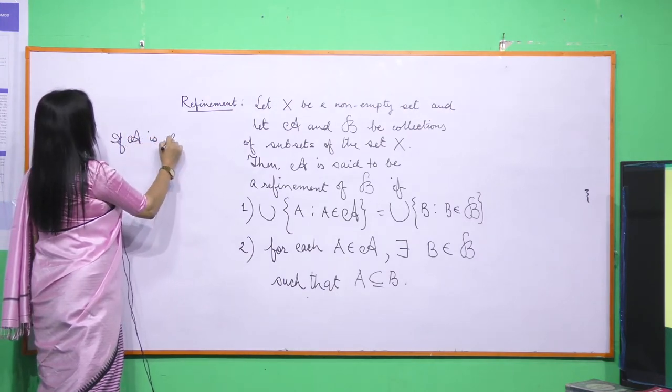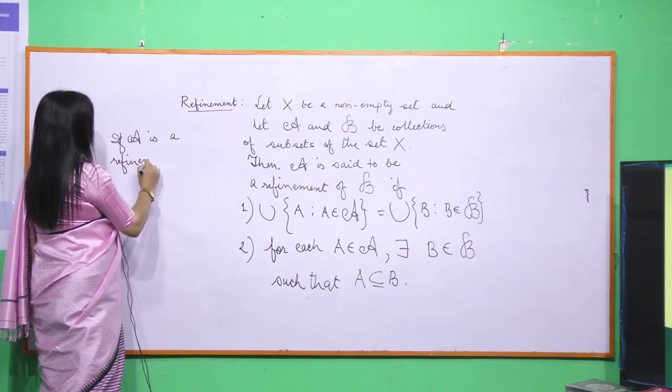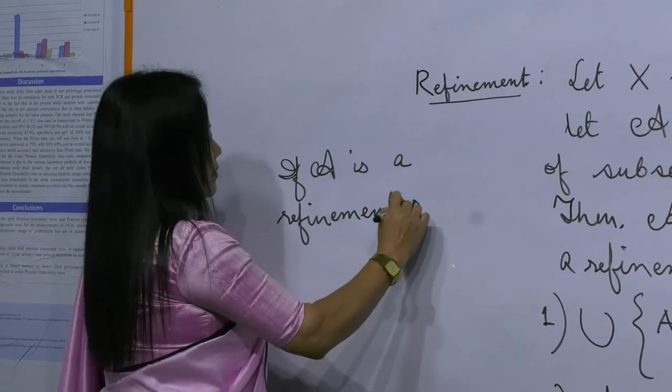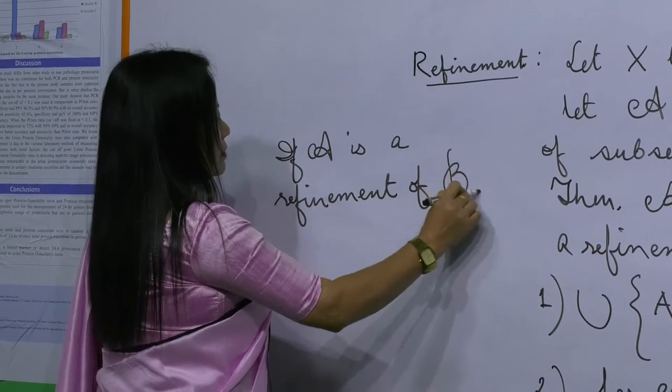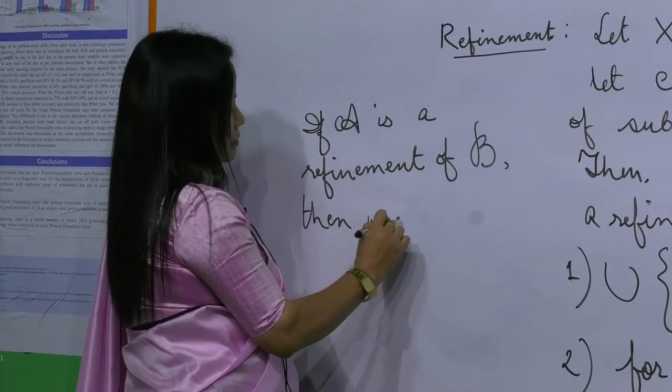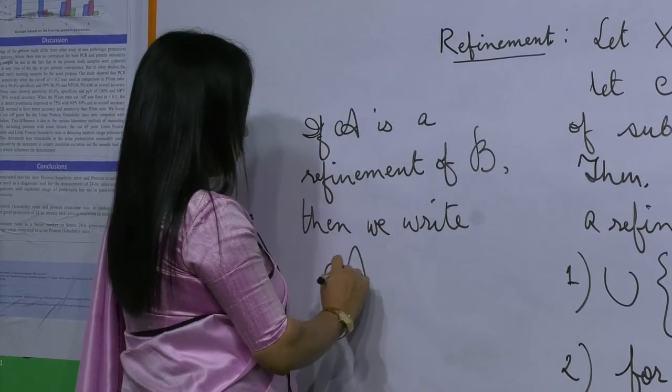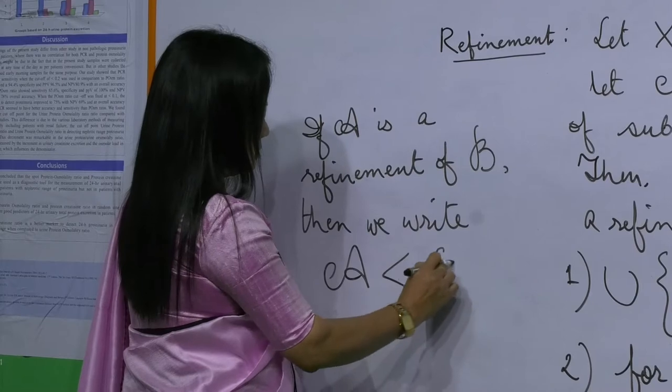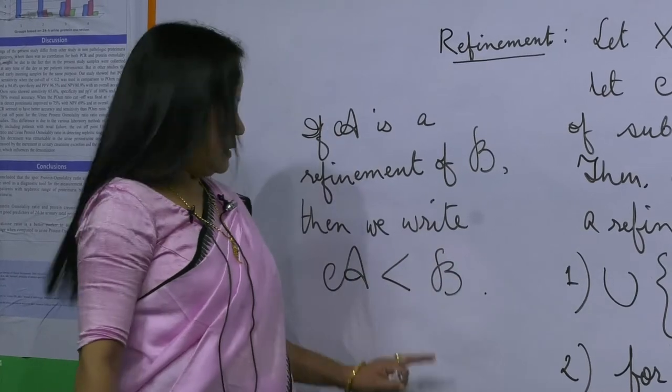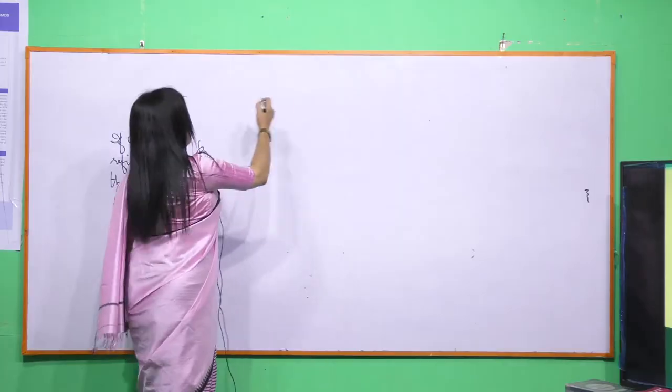If A is a Refinement of B, then we write like this. This says that A is a Refinement of B.